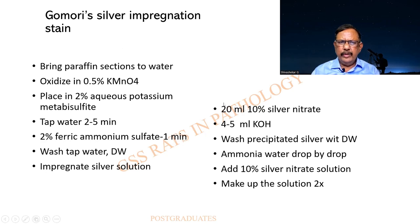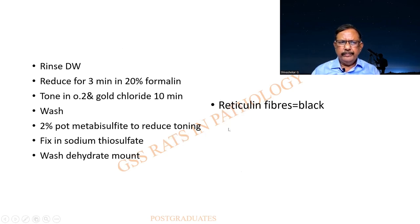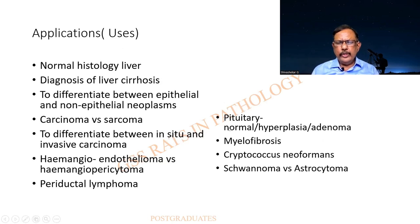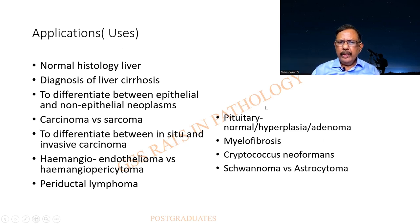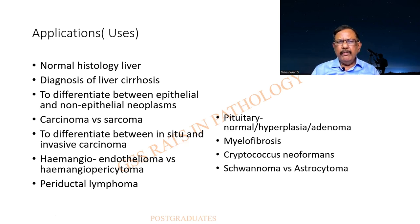This is Gomori's modification of the methenamine silver. What are the applications? I have already shown you: one, it can be for the normal architecture of the liver; a diagnosis of cirrhosis; to differentiate between a carcinoma and a sarcoma; also epithelial and non-epithelial lesions; early invasion; hemangioendothelioma and hemangiopericytoma; periductal lymphoma; a pituitary — normal, hyperplasia, and adenoma; myelofibrosis; Cryptococcus neoformans as a negative stain; and schwannoma versus astrocytoma. Always in special stains, have a list of applications by heart. I have given you a dozen — even if you can reproduce five in the examination, you are an excellent student.